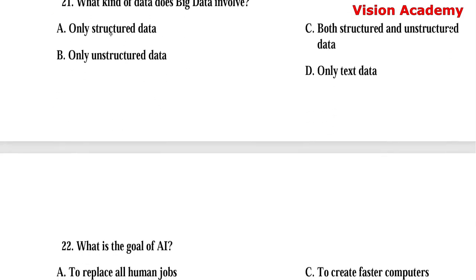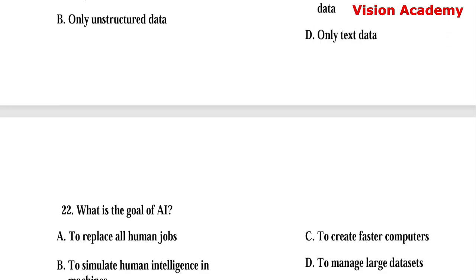Question number 21. What kind of data does big data involve? Option A: Only structured data. Option B: Only unstructured data. Option C: Both structured and unstructured data. Option D: Only text data. Here, option C, both structured and unstructured data, is the right answer.